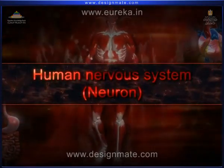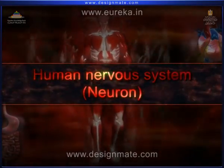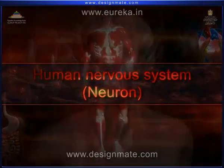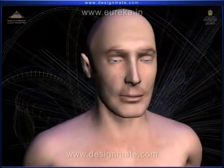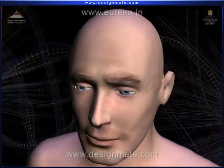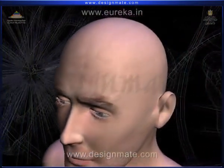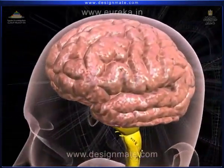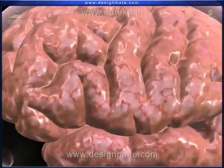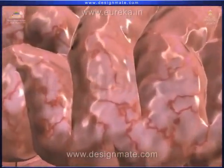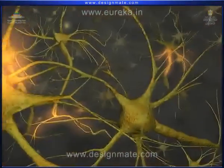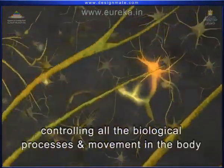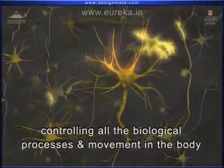Human Nervous System Neuron. In humans, the nervous system is a biological information highway responsible for controlling all the biological processes and movements in the body.